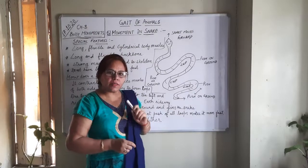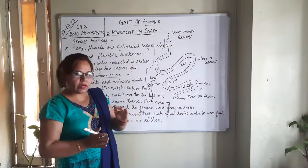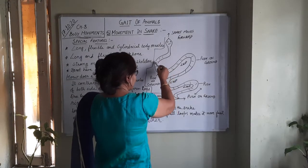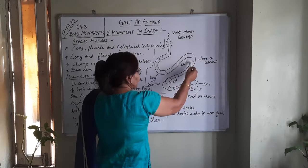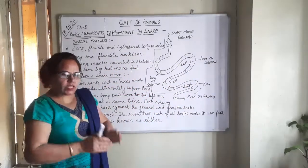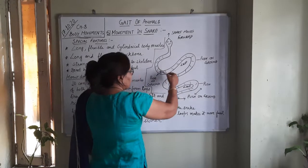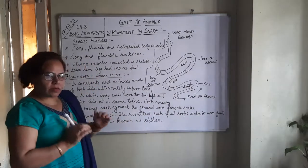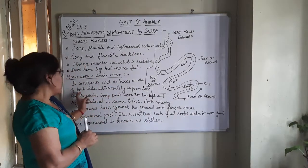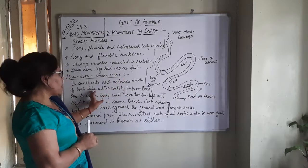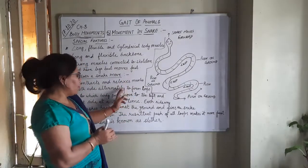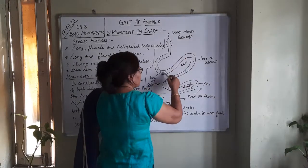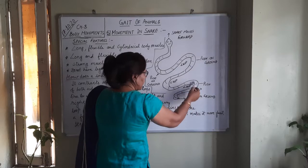As we have learned with other animals, they move by contraction and expansion of their muscles — when muscles on one side contract, the other side relaxes. Due to this contraction and expansion, the snake makes several loops. When it contracts and expands its body muscles, the muscles on both sides alternatively curve, forming loops — one loop to the right side, another to the left, and then again to the right.